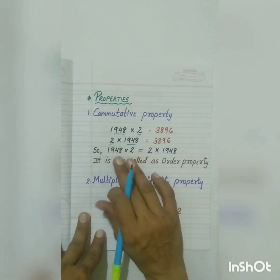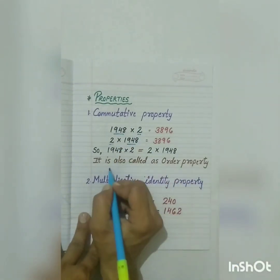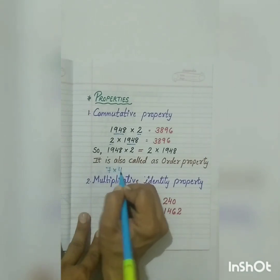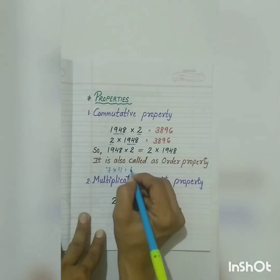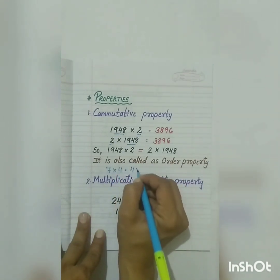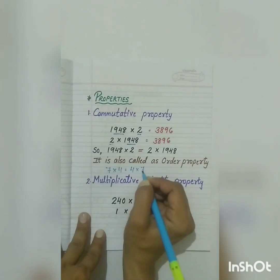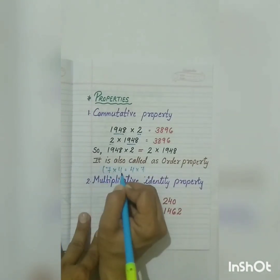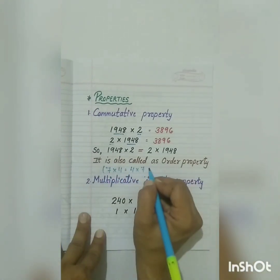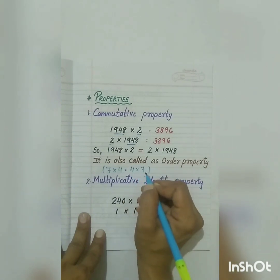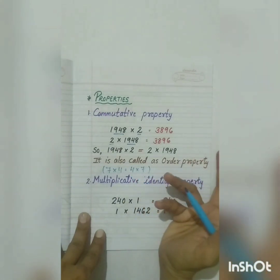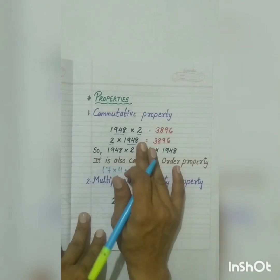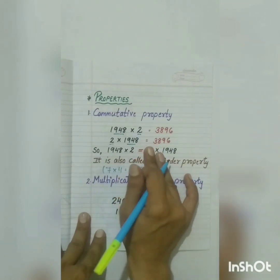For example, 7 multiplied by 4 is equal to 4 multiplied by 7. 7 fours are 28 and 4 sevens are also 28. So this is our commutative property.